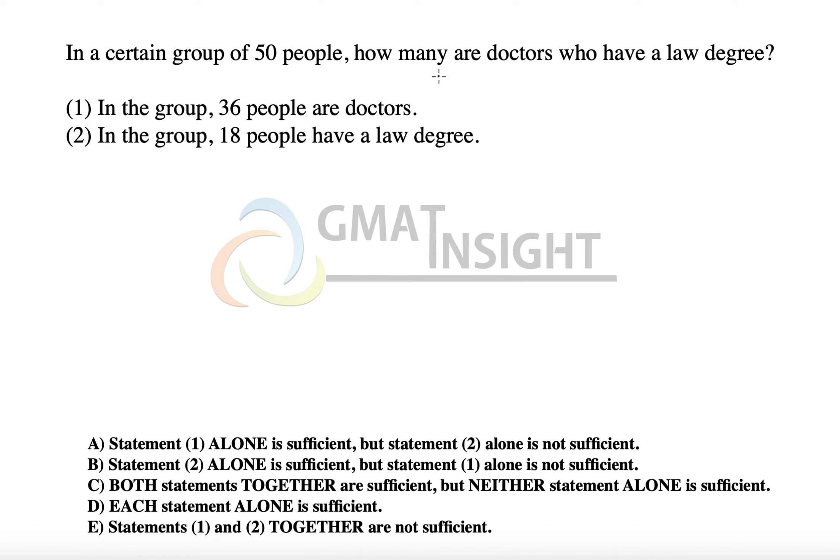In a certain group of 50 people, how many are doctors who have a law degree? The question is talking about these two possibilities - there may be some doctors, some who are not doctors, some may have law degrees, some may not have law degrees. This question looks like a question of overlapping sets.